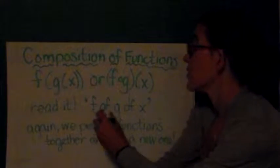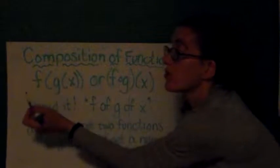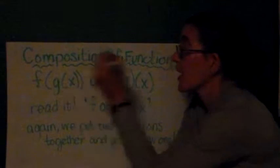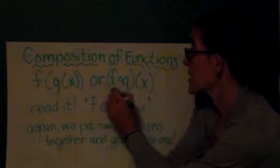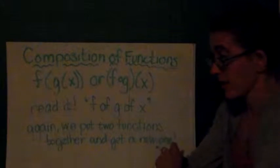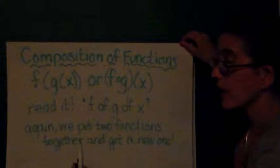How do we read it? We read f of g of x. So if I read this, I say f of g of x. If I read this, I say f of g of x. And again, we're going to put two functions together and get a new one.